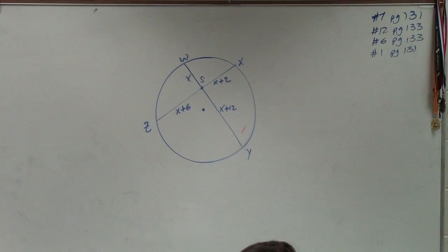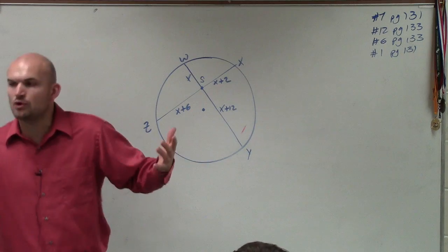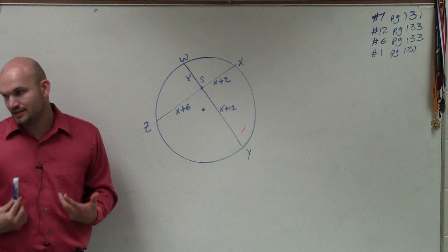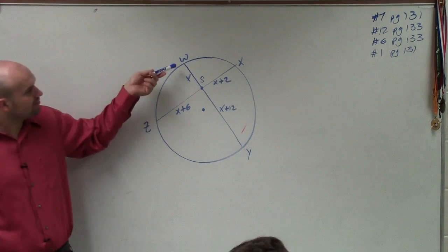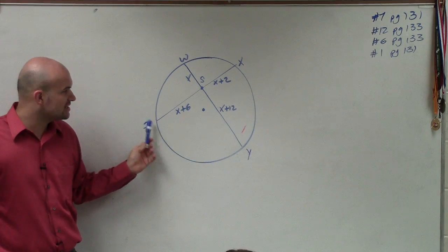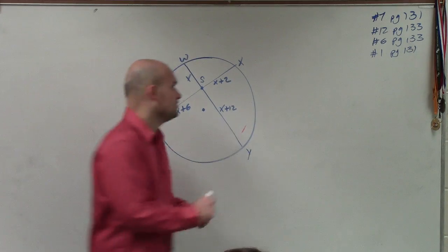Now, when looking at the form that I gave you guys, what we discussed is when you have two chords that intersect, what we understood by looking at this was that the product of WS times SY is equal to the product of ZS times SX. Correct? So let's go and write that out.